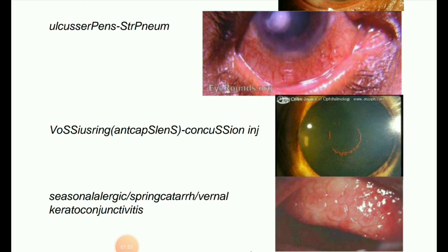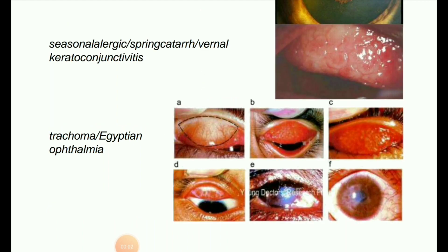Next image: seasonal allergic spring catarrh — vernal keratoconjunctivitis, as seen in the image. Next image: trachoma, also known as Egyptian ophthalmia, as seen in the image.